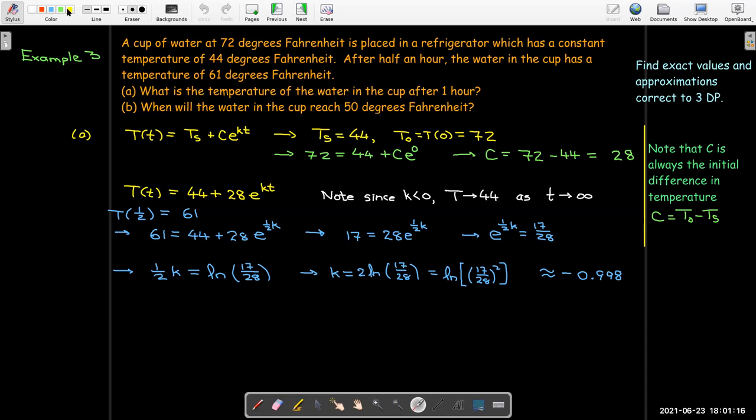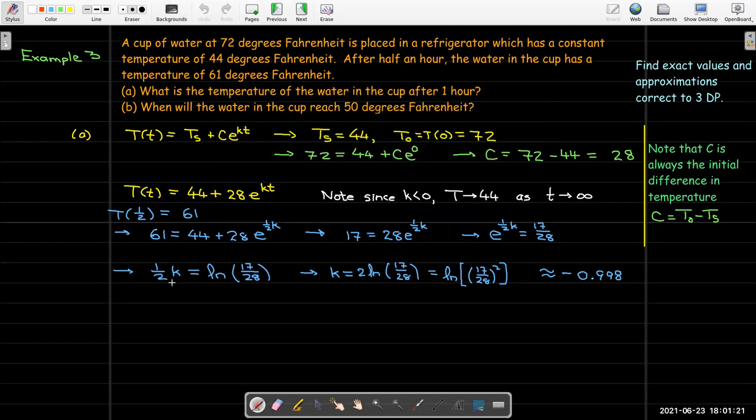So T(1) is going to be 44 plus 28 e to the kt. That's going to be 44 plus 28 e. What do we say the exact value of k is? It's the natural log of the fraction 17 over 28 squared times t.